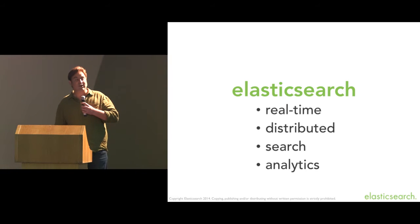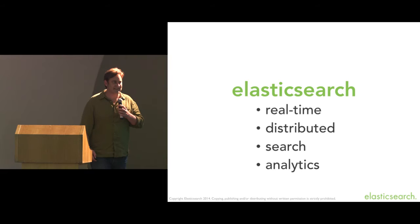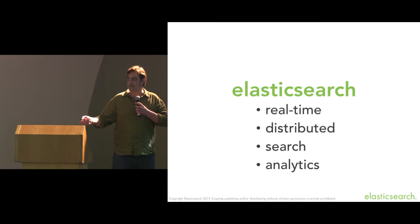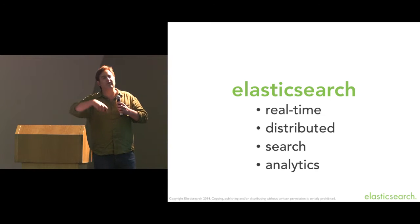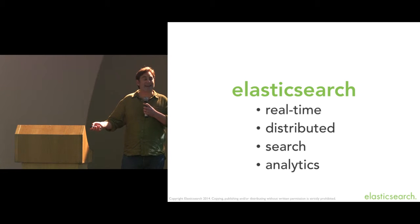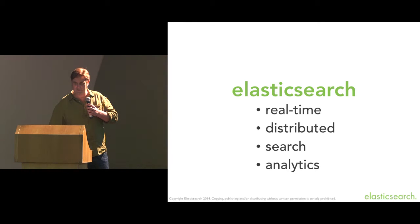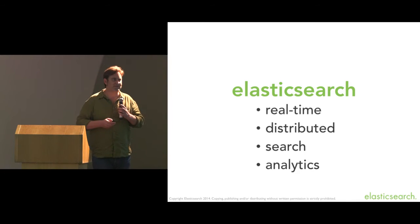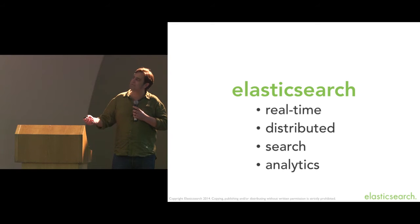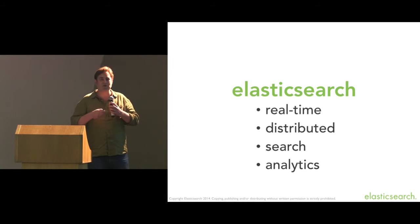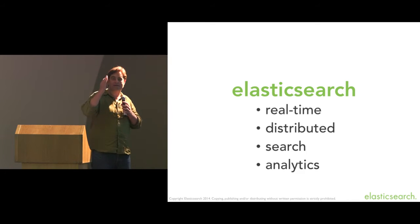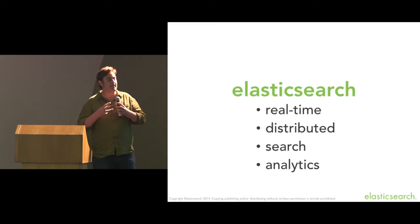For those of you who don't know, Elasticsearch is a real-time distributed search and analytics engine. It does full-text search, which is a hard job for traditional databases, but it also does structured search. It can calculate analytics — essentially groupings — in the context of the user's search results. You go to booking.com and type in 'Hotel London', and it tells you there are six five-star hotels and 14 four-star hotels. Those are all calculated on the fly based upon your search results, and that's the kind of thing it can do very easily.